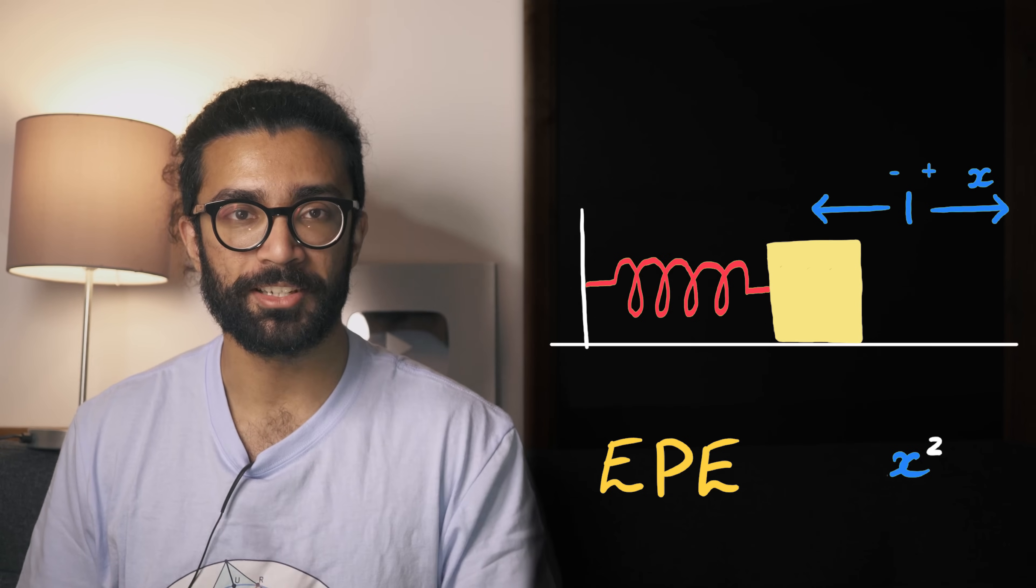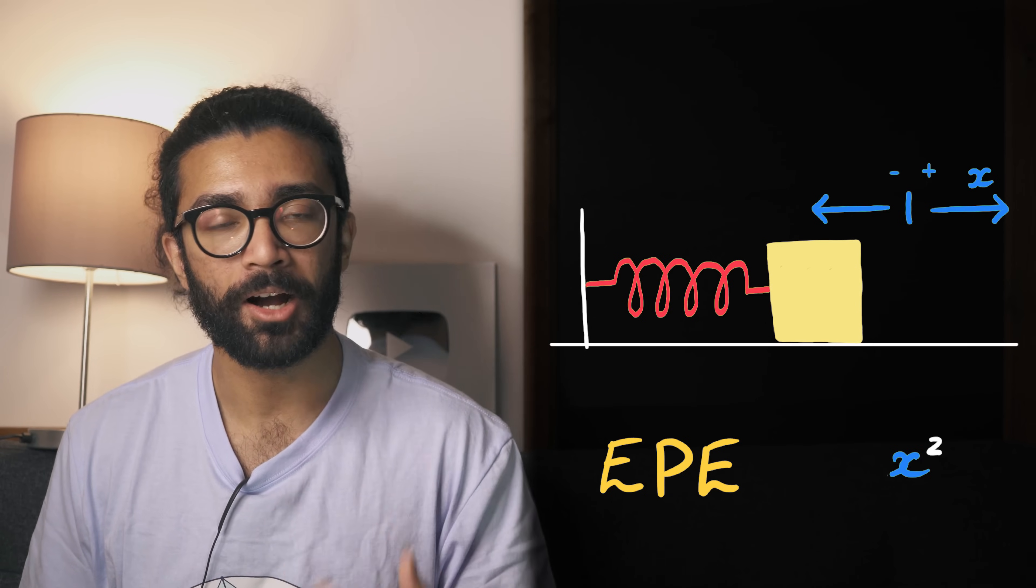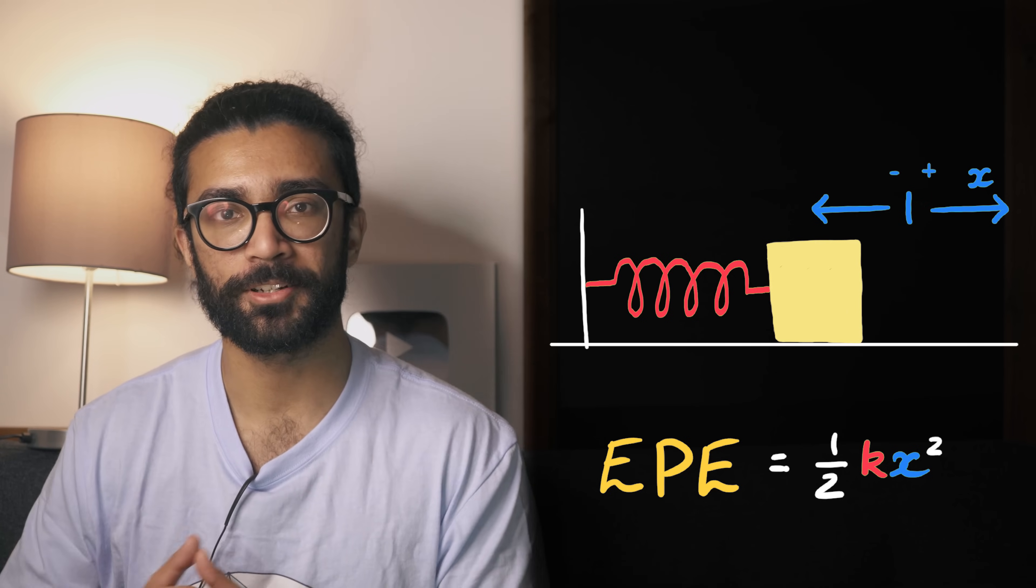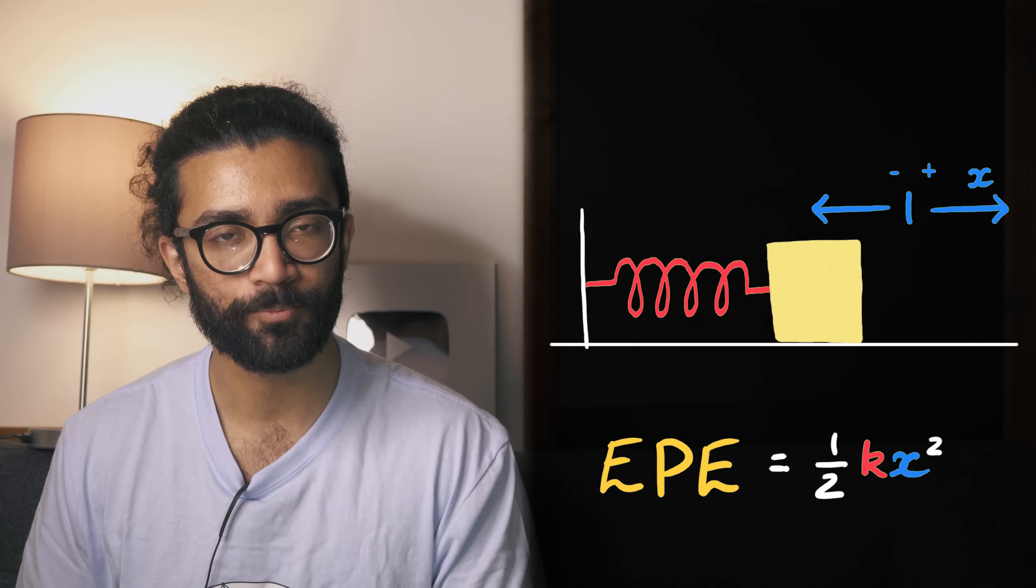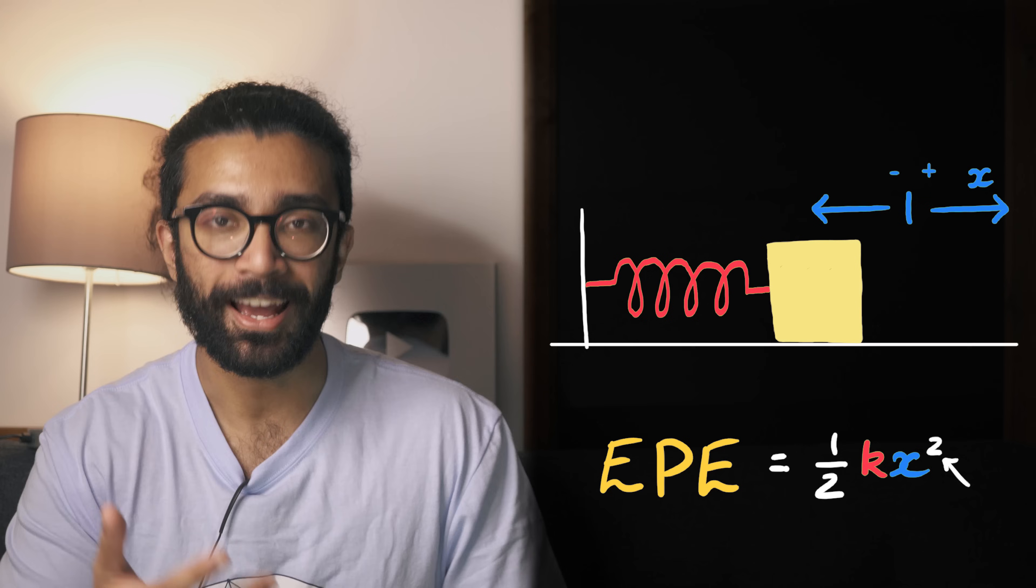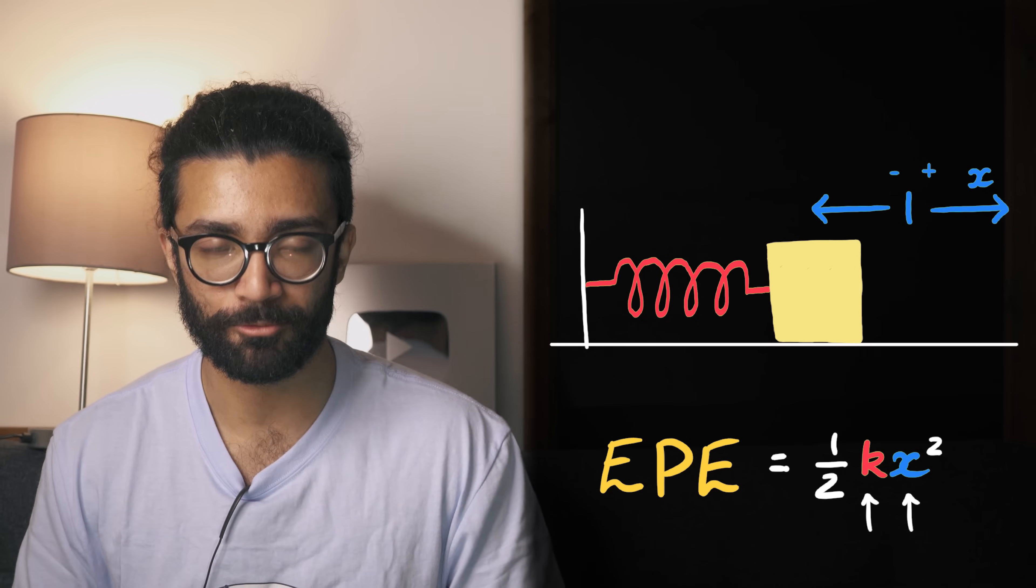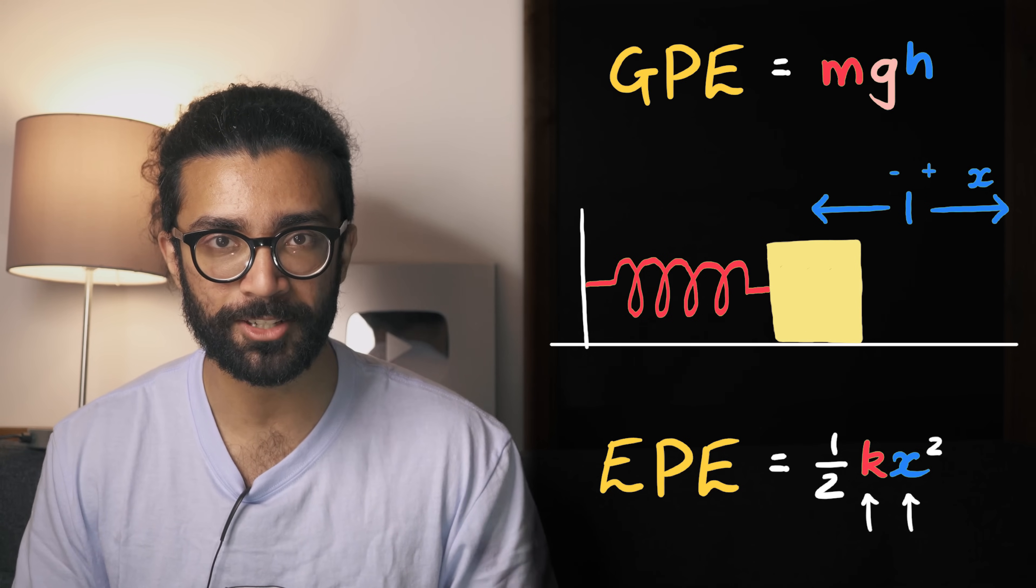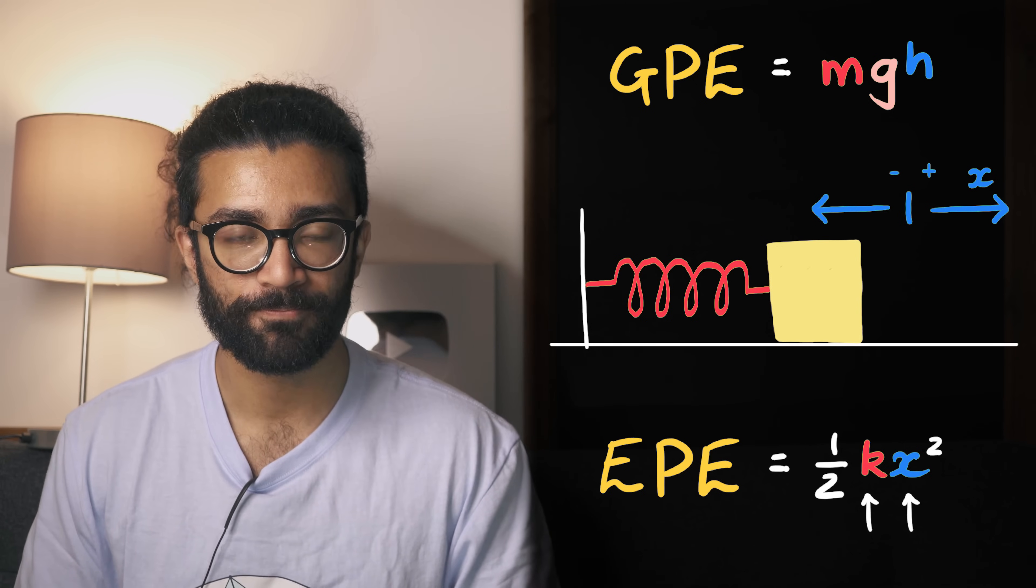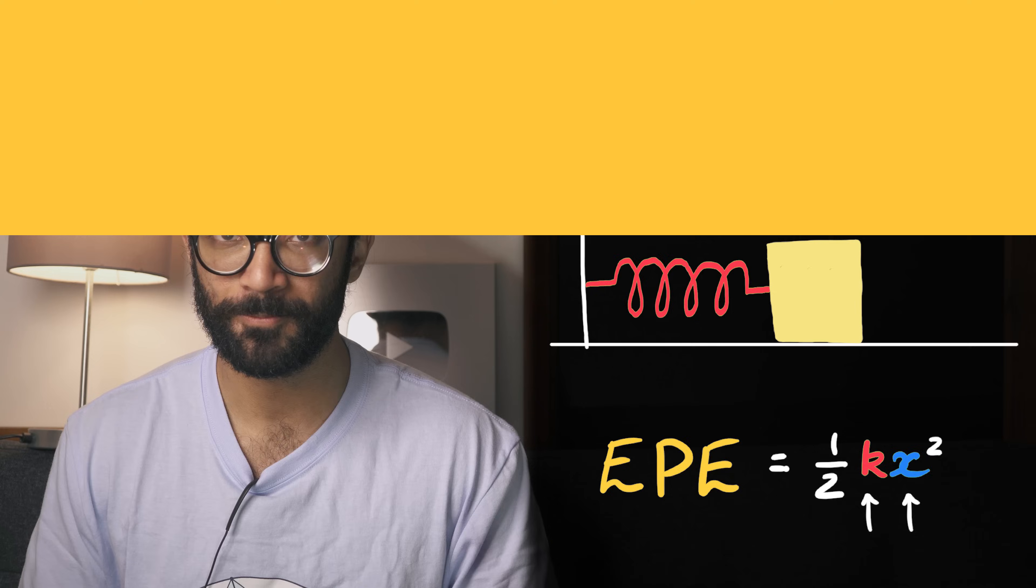The elastic potential energy stored in a spring, is given by half k x squared. Now, this looks very different, to the gravitational potential energy equation, from earlier. There's a factor of a half, and there's a squared quantity, and, it only depends on two things, rather than the three we saw, for gravitational potential energy. We'll see why all of this is the case later. For now though, let's move on to, level three.